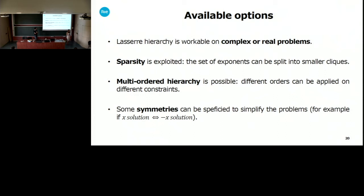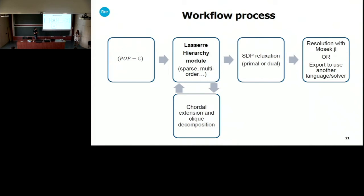For example, if you have this type of condition on your original problem, you can remove all the odd monomials. The workflow is as follows: you have your polynomial optimization problem in complex variables, and you use our LASER hierarchy module to build an SDP relaxation. You can use either the primal relaxation, which is the moment relaxation, or the dual, which is the sum-of-squares relaxation. At some point you have to convert your problem into real numbers, and then you can solve it using the package Mosek, or use an export to another language. The sparsity and multi-order options relate to chordal extension and clique decomposition.